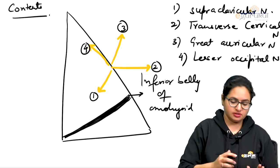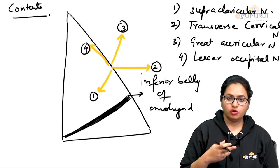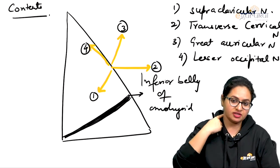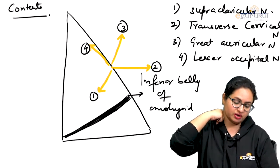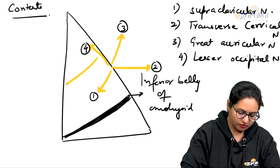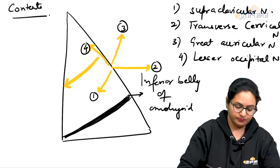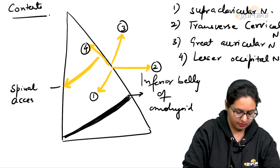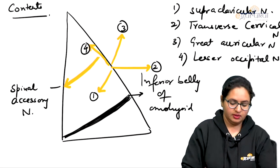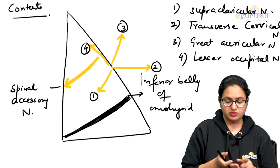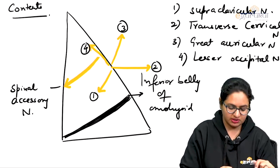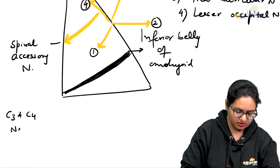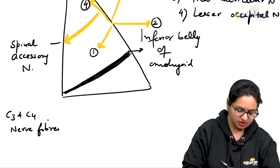Apart from these cutaneous nerves, we have a cranial nerve running through this triangle obliquely. It descends between the internal jugular vein and the internal carotid artery, then runs posteriorly and backwards, becoming one of the major contents of this posterior triangle. This nerve is the spinal accessory nerve, and as it runs obliquely, it supplies the sternocleidomastoid and trapezius muscles. Along with it, C3 and C4 nerve fibers run parallel to this spinal accessory nerve.